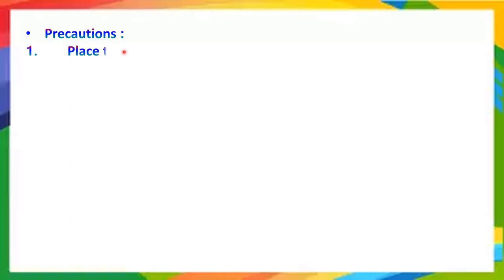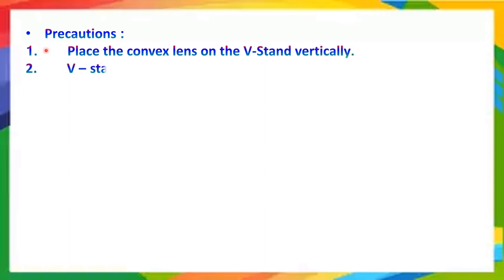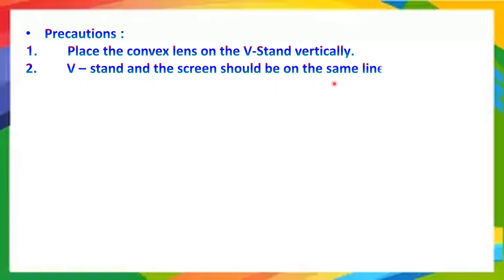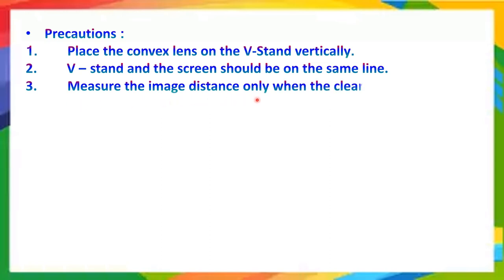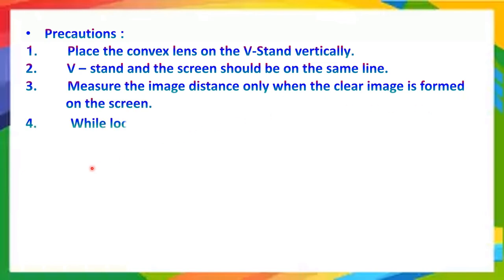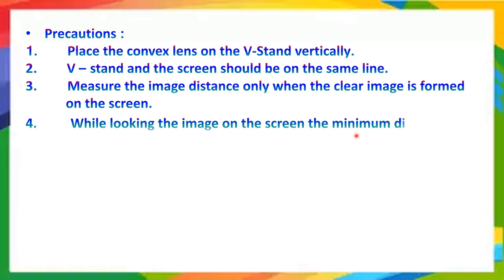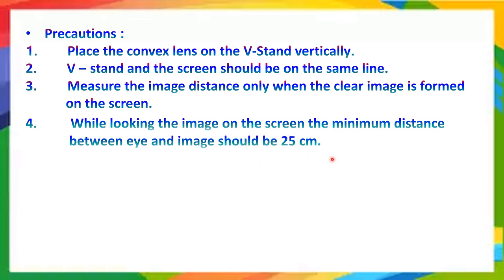While doing this lab activity, there are some precautions: place the convex lens on the V-stand vertically; the V-stand and the screen should be on the same line; measure the image distance only when a clear image is formed on the screen; and while looking at the image on the screen, the minimum distance between the eye and the image should be 25 centimeters. Thank you.